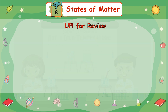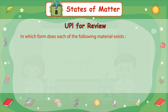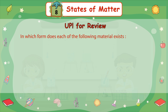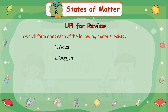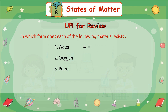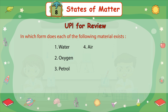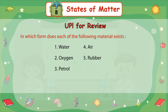Up for review: In which form does each of the following material exist? 1. Water, 2. Oxygen, 3. Petrol, 4. Air, 5. Rubber, 6. Ice.